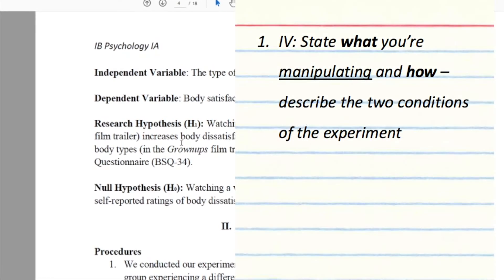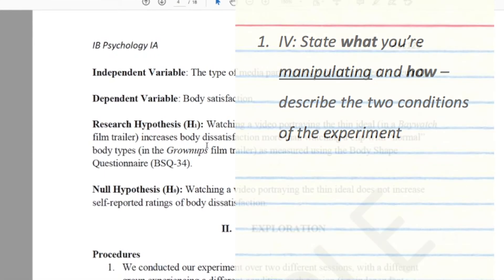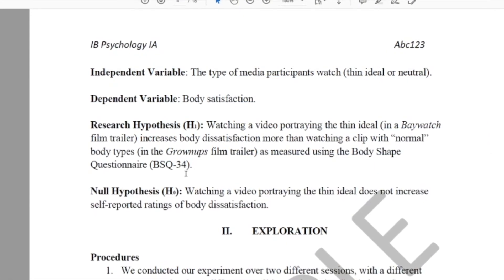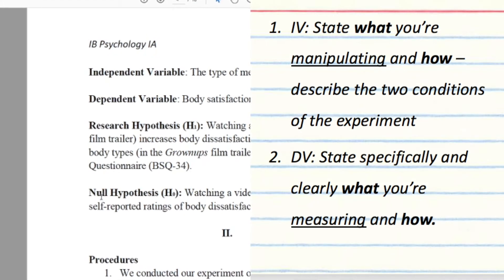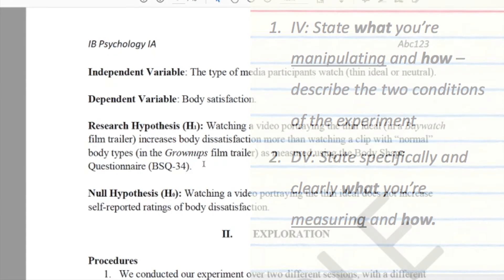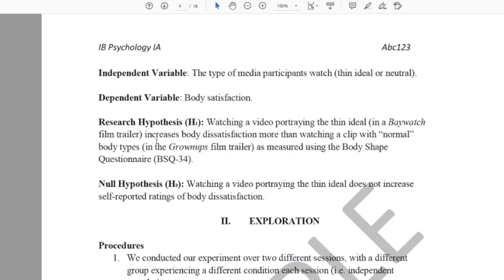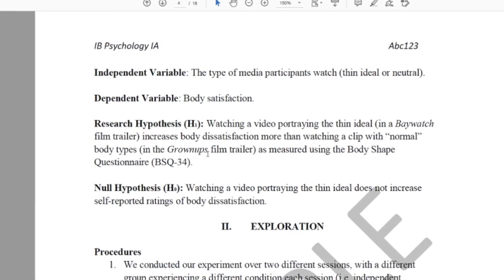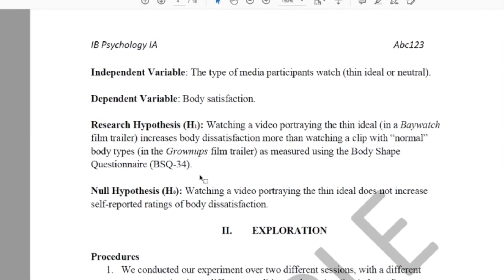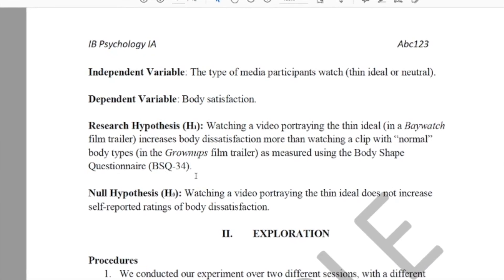We know what's going to happen in this condition compared to this condition. That's my independent variable. And we know exactly how I'm going to measure it with my dependent variable because I've stated the questionnaire, the tool that I'm going to use. I find that using these brackets is a really good way to add specific details of the different conditions in the research hypothesis. So that's something that you might want to try.